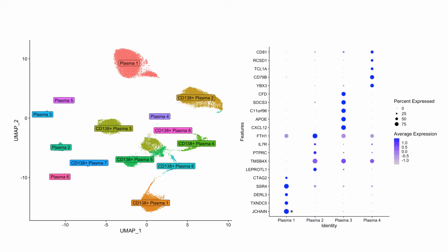This is a dot plot with four clusters, just showing the gene signatures of four clusters as an example. I have the gene signature for plasma 1, 2, 3, and 4, which corresponds to the different labels I have — so this is just a subset of the clusters that I have on the left hand side.